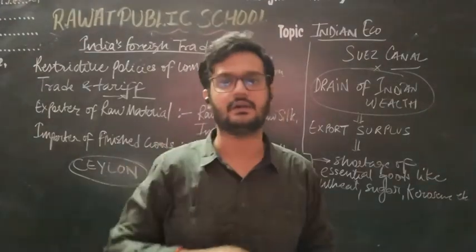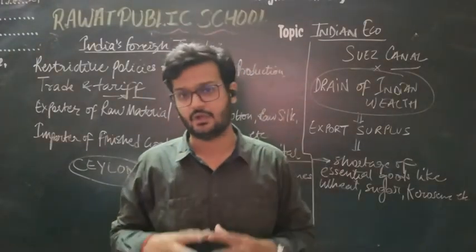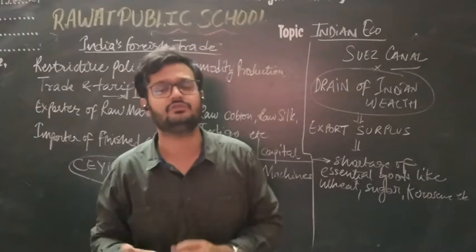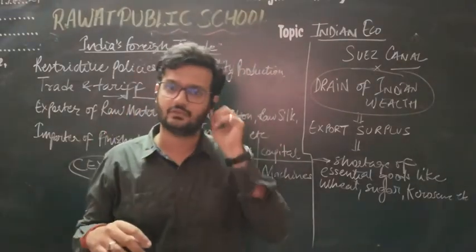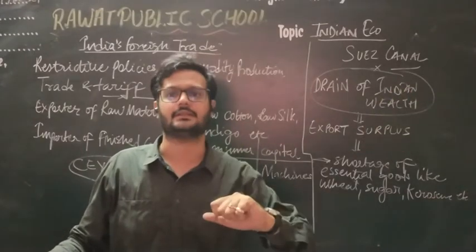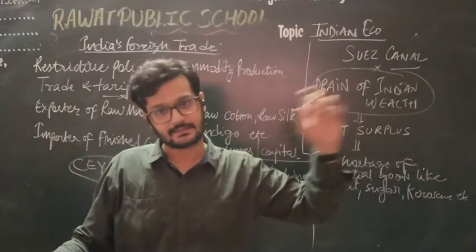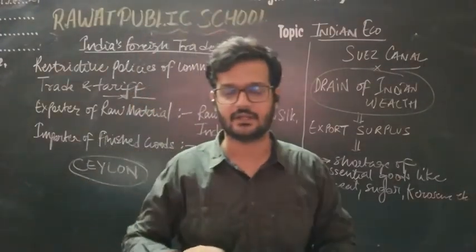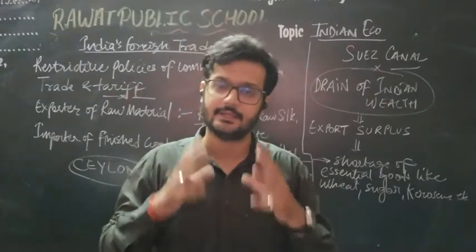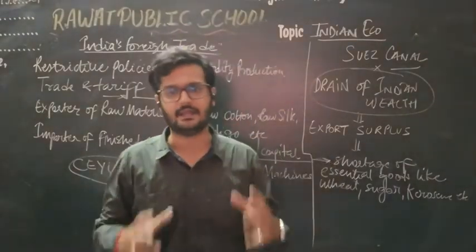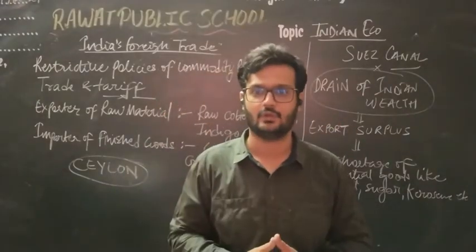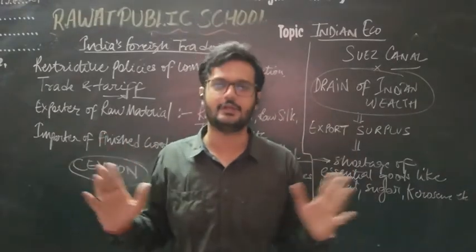That gold and silver was used by the British to make payments to Britishers working in India — those in the police, the army, and administrative services managing various offices. The salaries of all these British officers and the expenses of their offices were paid using the gold and silver received from India's exports. So our raw materials, our land, and all our resources were being used, yet we received nothing. This is how the drain of Indian wealth occurred. This was about the foreign trade policies followed by the Britishers.